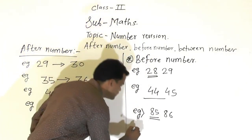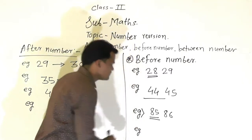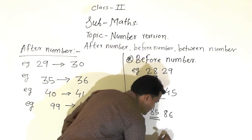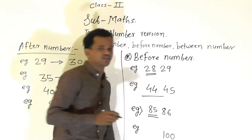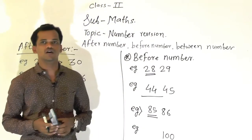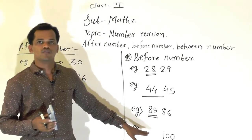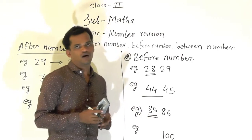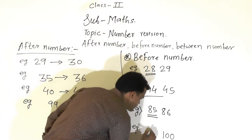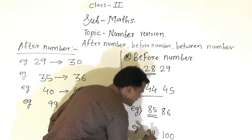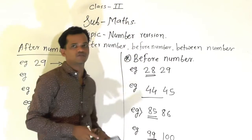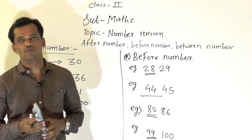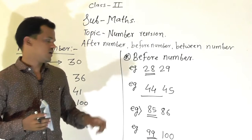One more example we will see here. The given number is 100, and the question is which is the before number of 100. So in the number series, 99 comes before 100. So 99 is the before number of 100.